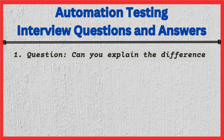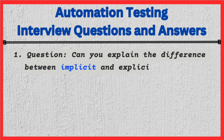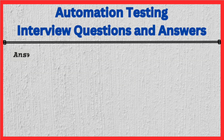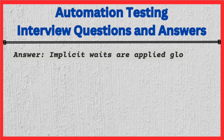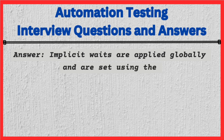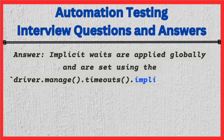Question: Can you explain the difference between implicit and explicit waits in Selenium? Answer: Implicit waits are applied globally and are set using the driver.manage().timeouts().implicitlyWait() method.